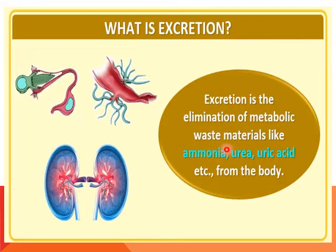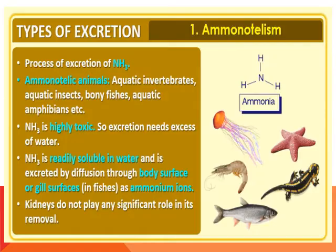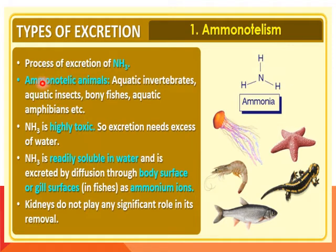Excretion is the elimination of metabolic nitrogenous toxic waste material like ammonia, urea, and uric acid from the body. Depending upon the type of waste, we have three types of excretion: ammonotelism, urotelism, and uricotelism. Ammonotelism is the process of excretion of ammonia.